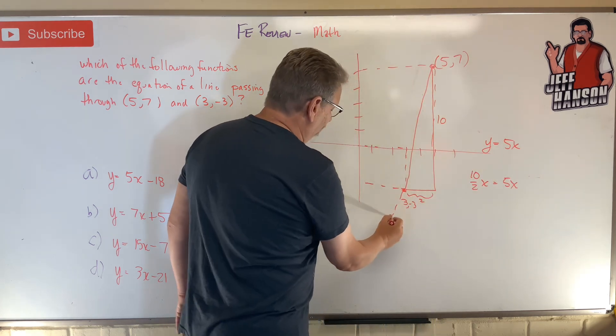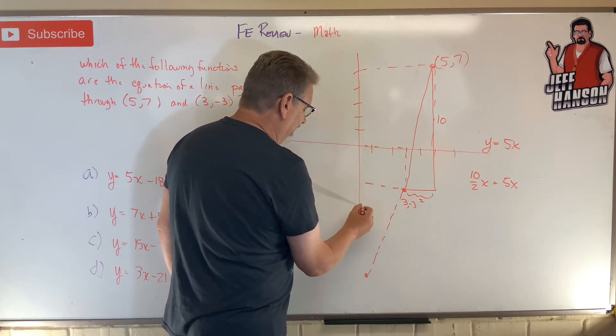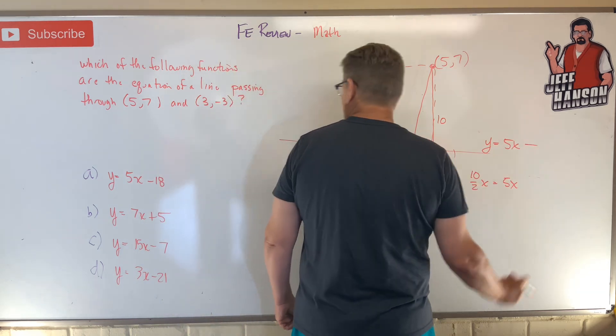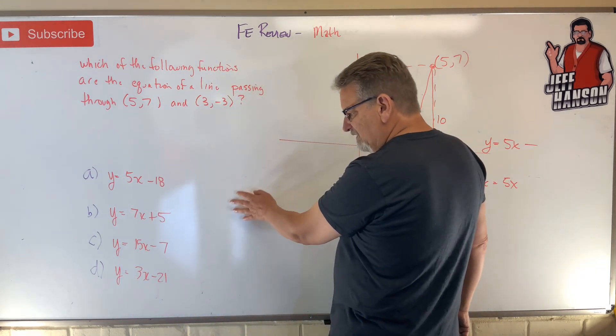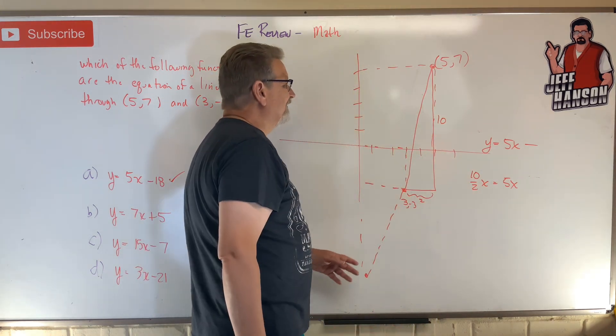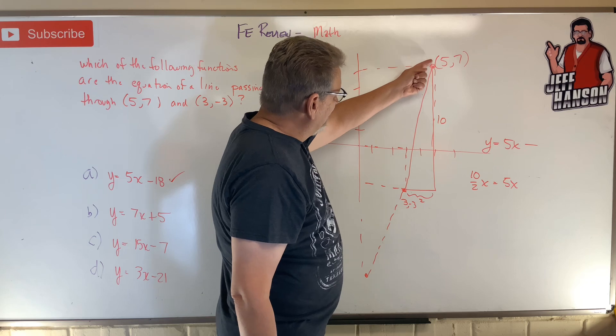And then where does the y-intercept happen? Somewhere down there, right? Somewhere way negative, so it's minus something. Do we have any answers like that? Really we only got one that makes any sense.